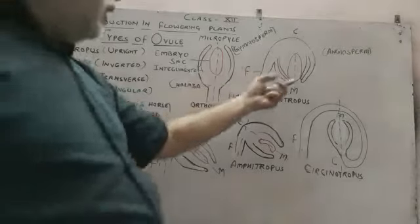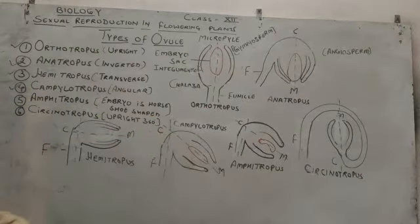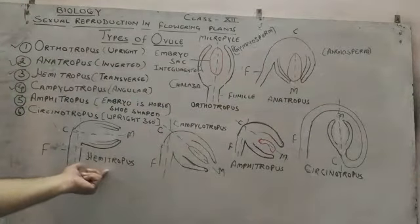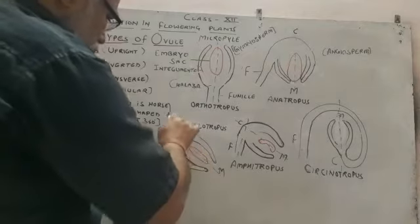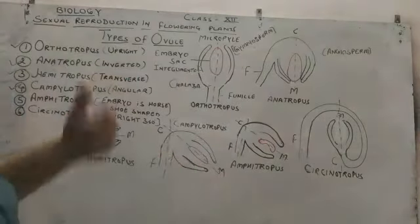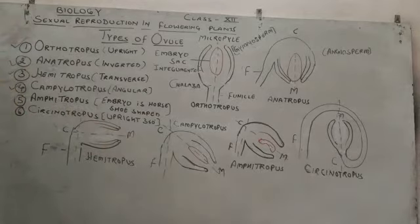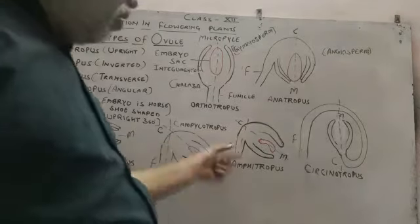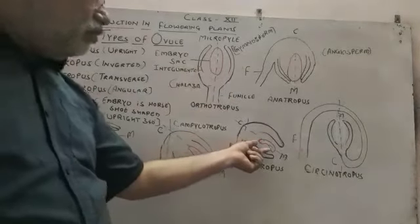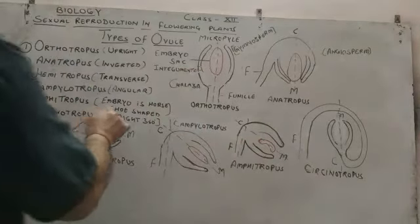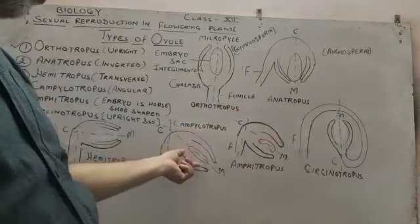In anatropous the body is at a right angle relative to the funicle, and in hemitropous the ovule is also at a right angle. In this diagram, we can see the micropyle and the funicle. The next type is amphitropous — in amphitropous, the funicle and the body are at an angle, but the body is bent.